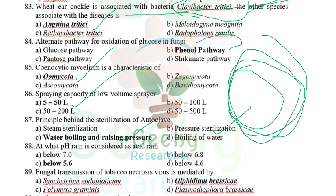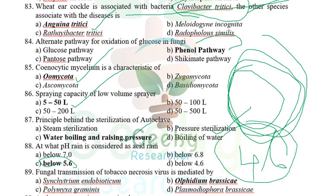At what pH is rain considered acid rain? Below 5.6 according to some colleagues, but I found 4.4 to 4.6 online. I'm not sure — please let me know. Fungal transmission of tobacco necrosis virus is mediated by Olpidium brassicae.